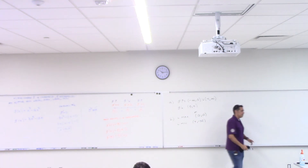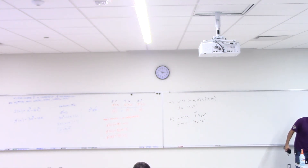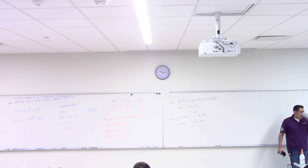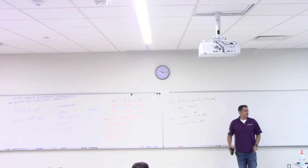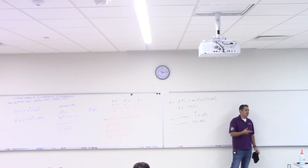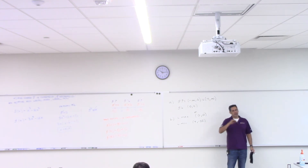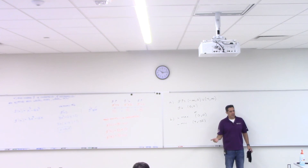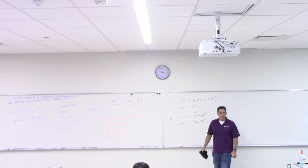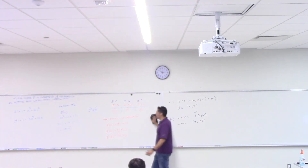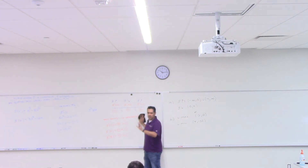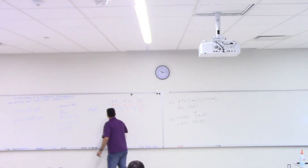Is the second derivative going to eliminate the need for test points? No, we still need them. There is a second derivative test, but it only works when the first derivative equals zero — it can't handle when the derivative doesn't exist. We'll get to that, but we need to make sure we understand the first derivative test first.